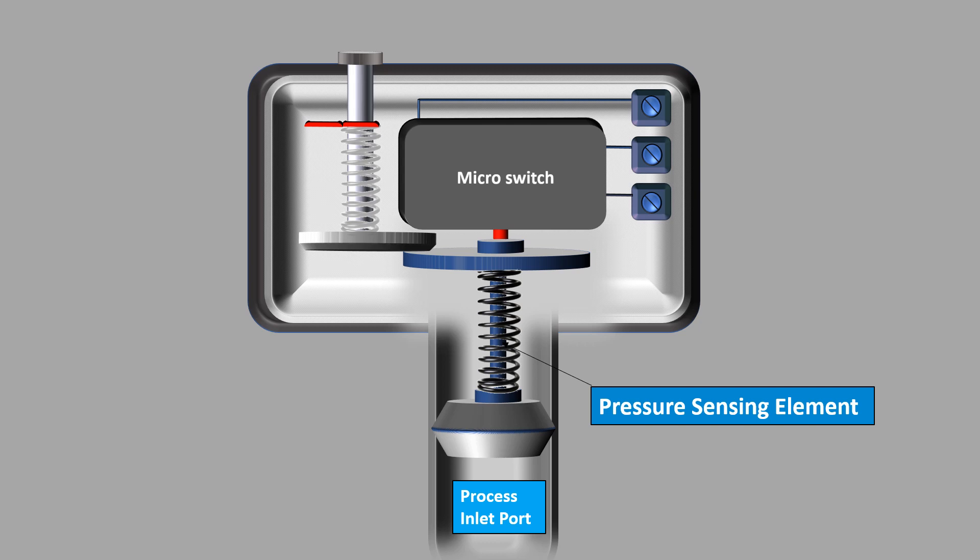Diaphragm piston assembly: The diaphragm along with the other sealing parts protects the internal parts of the switch from the process fluid. The type of diaphragm material is selected based on the type of fluid and its temperature.